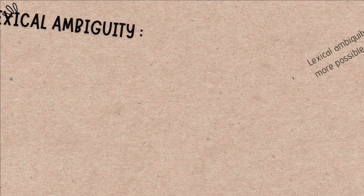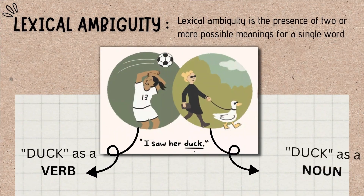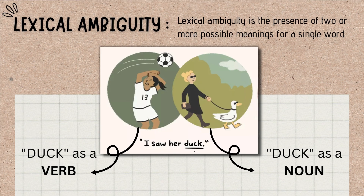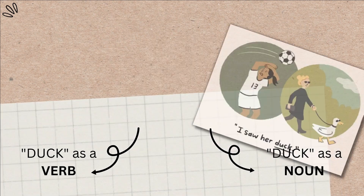Now let's talk about lexical ambiguity. Lexical ambiguity is the presence of two or more possible meanings for a single word. For example, in the sentence 'I saw her duck,' where 'duck' is used as a verb as well as a noun.